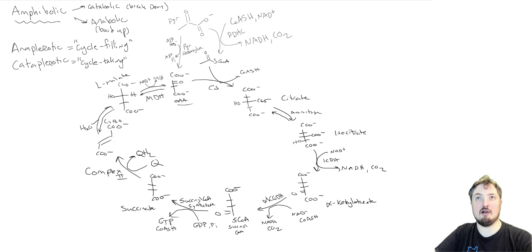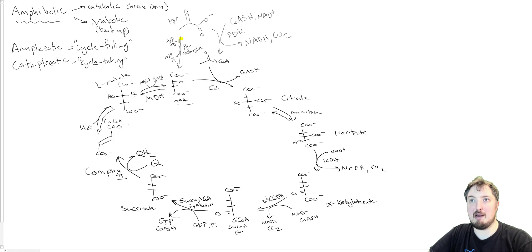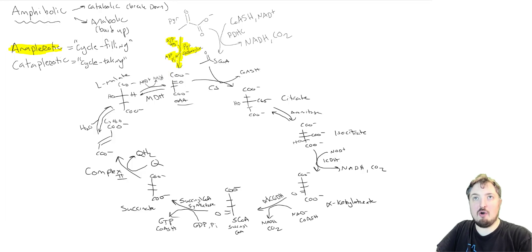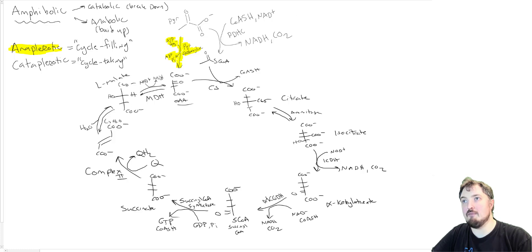And so a number of these reactions are what we consider anaplerotic which is cycle filling. We saw one of these when we were talking about pyruvate carboxylase in gluconeogenesis. I am going to color code these yellow for cycle filling. And remember that what is happening here is we are making the OAA that we need to start the reactions of the Krebs cycle. Pyruvate is all you need. We can make it into acetyl CoA using the pyruvate dehydrogenase complex, giving off that CO2. We can also make OAA which is the other reactant using pyruvate carboxylase.